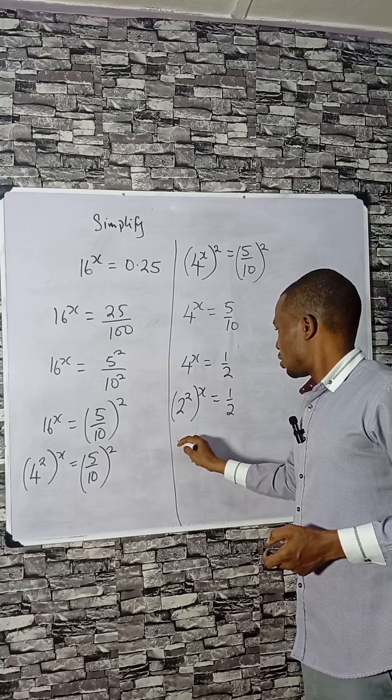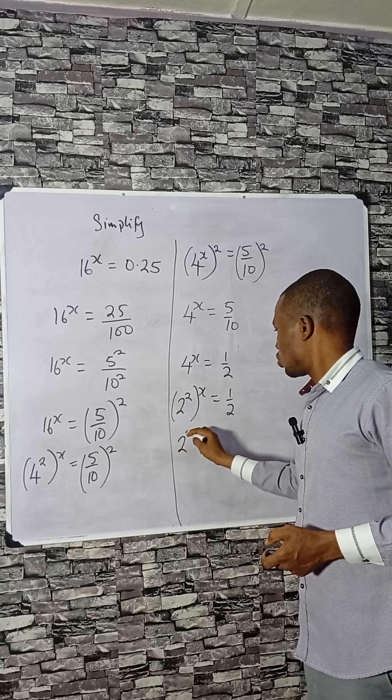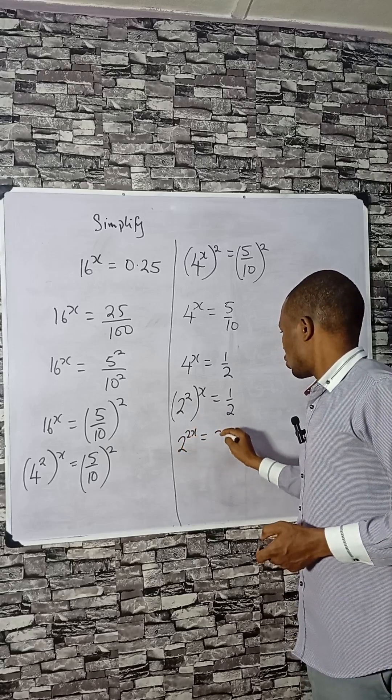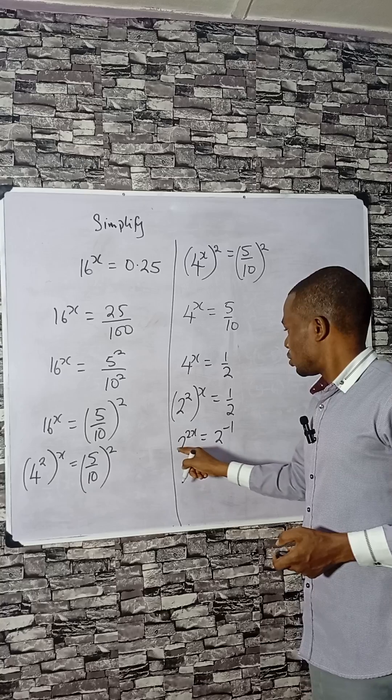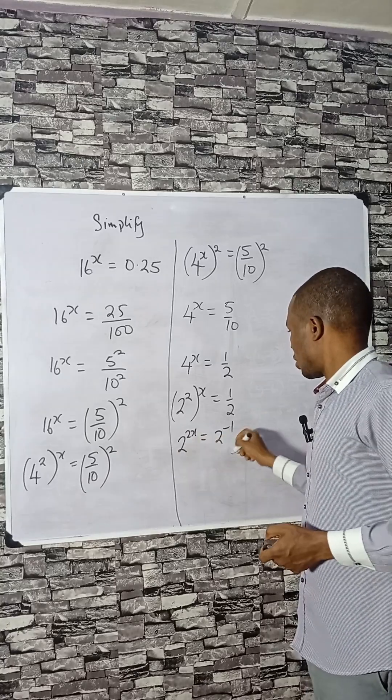So 2 squared to the power x, which is 2 raised to power 2x, equals 2 to the minus 1. Having the same base, you can compare the powers.